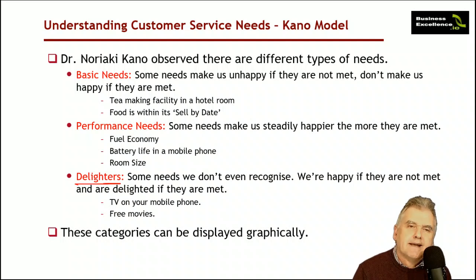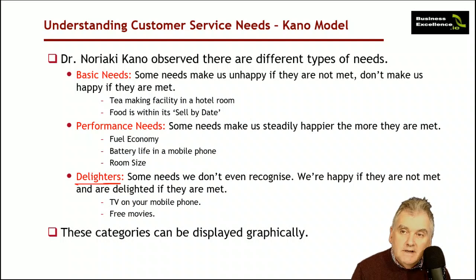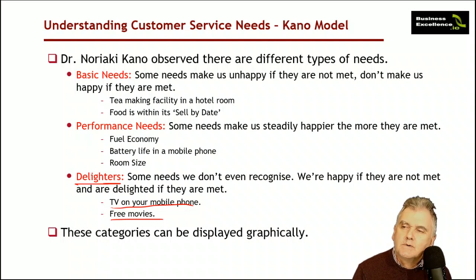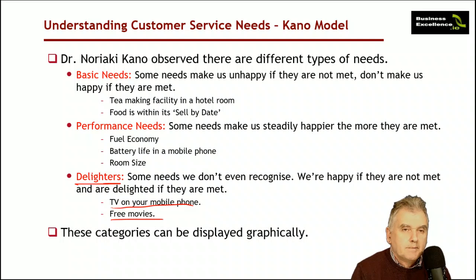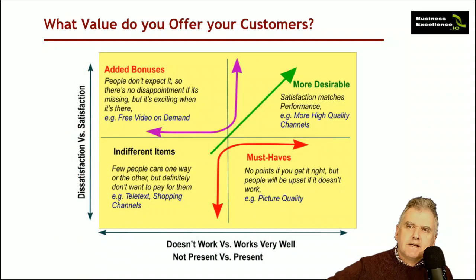The third type he described is what's known as a delighter — you didn't even know it was possible, never asked for it, and it's given to you, often for free. This could be free television on your phone, free movies, a free upgrade on a hotel room or flight, a free bottle of wine with a meal. You're delighted if you get it, but if you don't get it, no problem because you never asked for it in the first place.